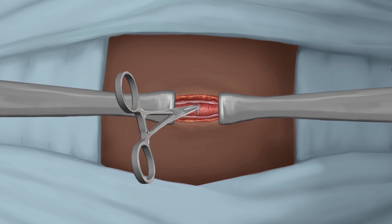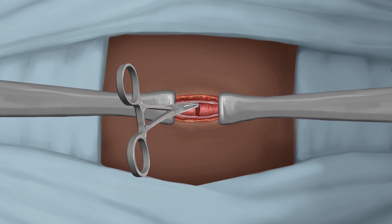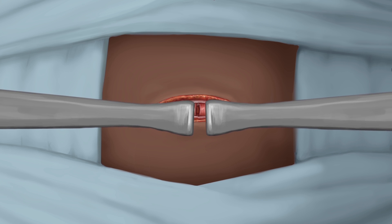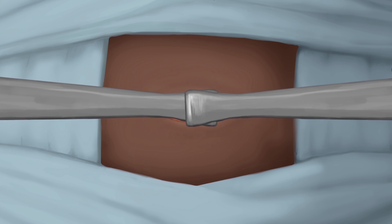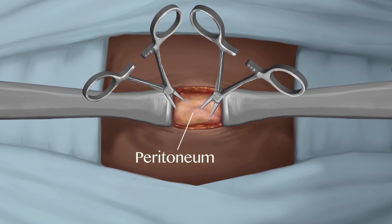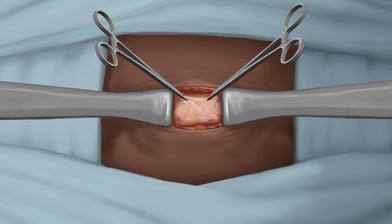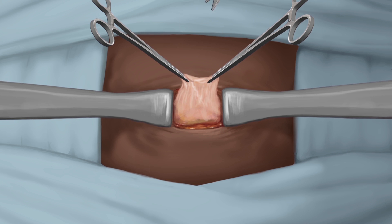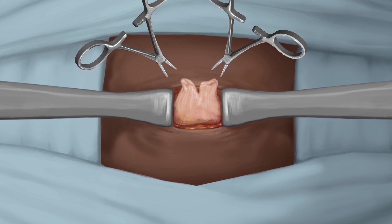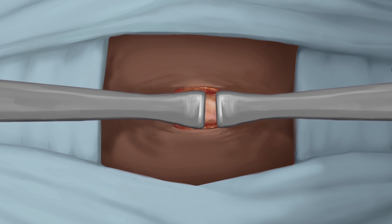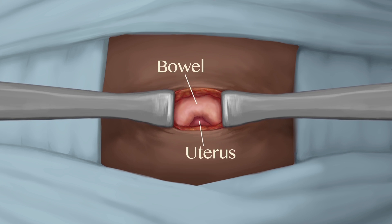Bluntly create a hole in the midline and separate the rectus muscles with retractors. Confirm the peritoneum layer by checking transparency. Push away any bowel and then create a hole in the peritoneum. Extend the hole in the peritoneum and reposition the retractors.